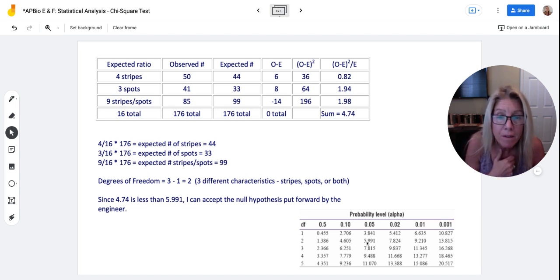Well, 4.74 with two degrees of freedom, that means that it could have happened somewhere between 10 and 50% of the time.